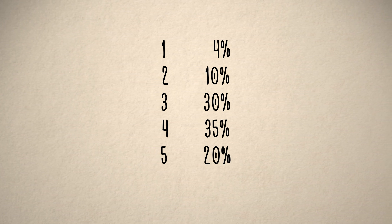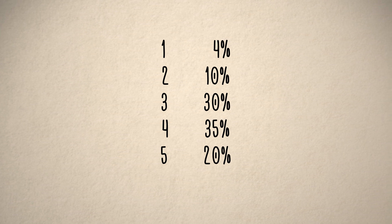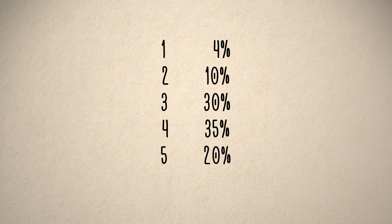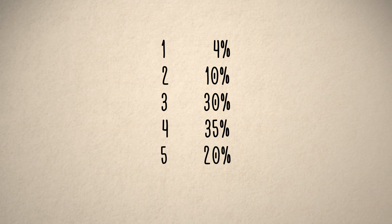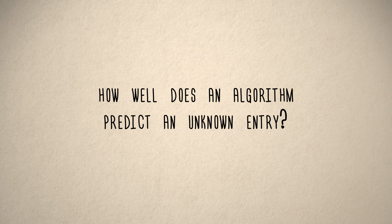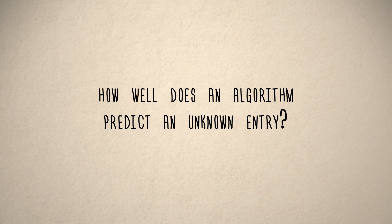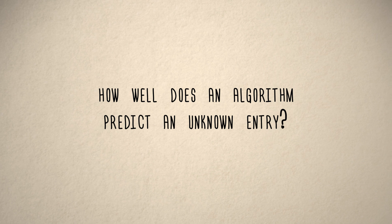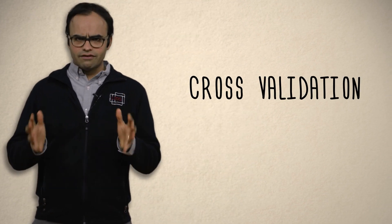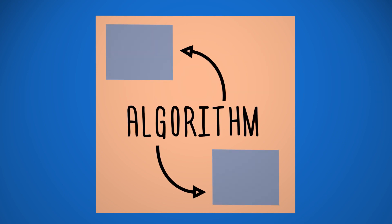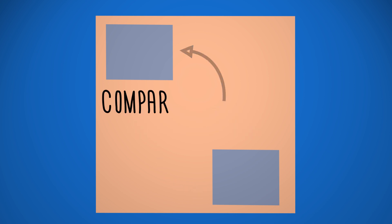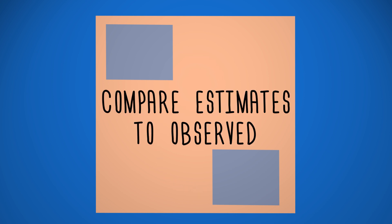Now, we shall apply various algorithms we have learned to this dataset and evaluate their performance. To evaluate the performance of an algorithm, we need to know how well it predicts an unknown entry. If the entry is unknown, we will never know how good the prediction is — this is a standard dilemma all such evaluation tasks face. To overcome this, a simple but clever solution known as cross-validation has been developed: we take the available data, hide a small fraction of it from the algorithm, ask the algorithm to predict the values of the hidden data, and then compare performance against the hidden ground truth.